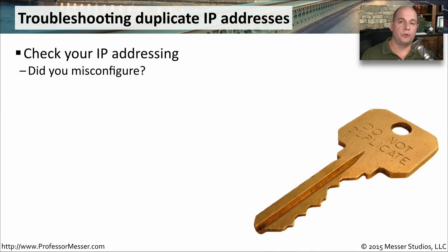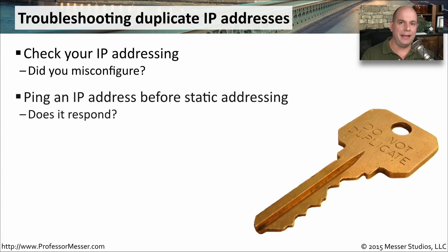There are a number of steps you can take to troubleshoot a duplicate IP address problem. First, check what you've configured for IP addressing, especially if you're configuring it statically — verify the IP address, subnet mask, and default gateway. Before assigning a static address to a device, use a second device to try to ping that address to see if it's already in use. You'll receive a response back from the ping if that address is already on the network. Note that this won't work if a personal firewall is preventing the device from responding to pings.